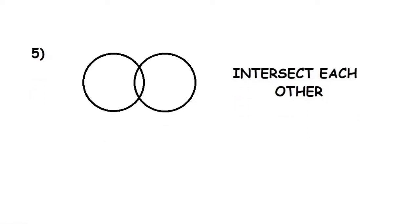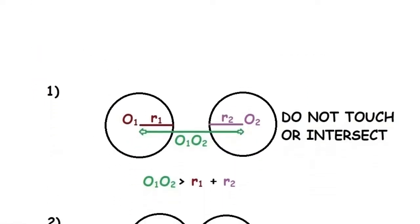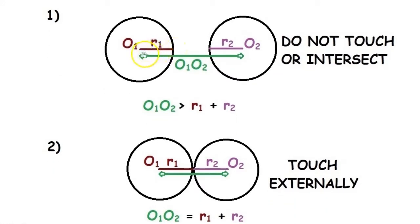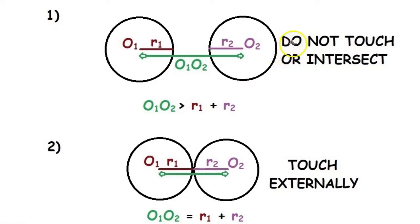When we consider the first situation, the two circles are away from each other. We can notice that the distance between the centers O1O2 is greater than the sum of the radii of both circles, R1 plus R2. This can be clearly seen in the diagram. So when O1O2 is greater than R1 plus R2, the two circles do not touch or intersect each other.